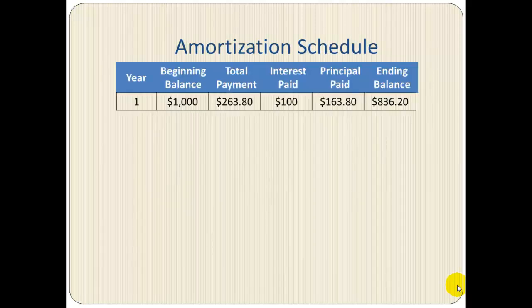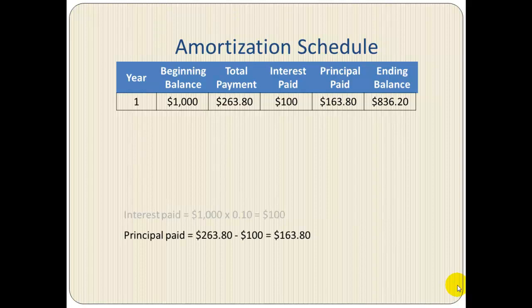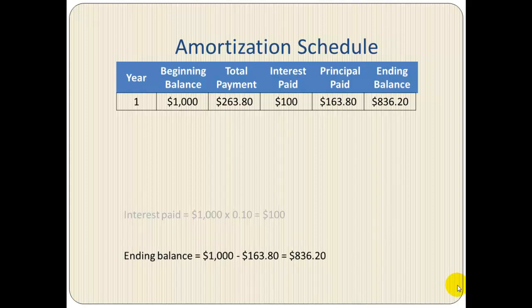Let's take a look at the amortization schedule. In year one, the beginning balance is one thousand dollars with a payment of two sixty-three eighty. Out of two sixty-three eighty, one hundred dollars is the interest paid and the rest — one hundred and sixty-three dollars and eighty cents — is the principal paid. The interest paid on the balance is one hundred dollars, and the principal paid is two sixty-three eighty minus one hundred, so one hundred and sixty-three eighty reduces the balance.